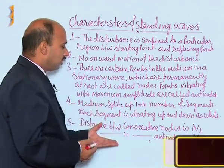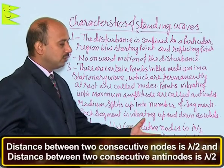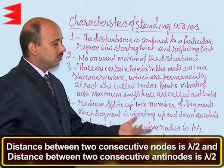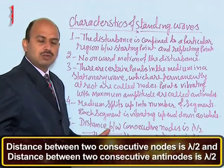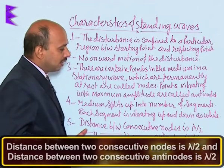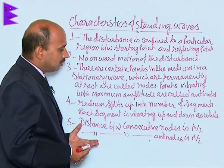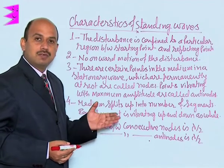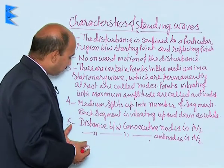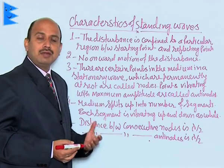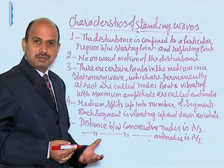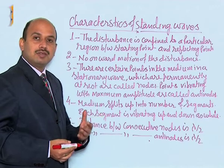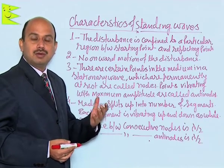The fifth property is that the distance between two consecutive nodes is lambda by 2 and two consecutive antinodes is also lambda by 2. The sixth property is that the distance between one node and the adjacent antinode is lambda by 4. Also, the time period and wavelength of the standing wave is equal to that of the component waves — that is, the waves which are forming the standing waves.